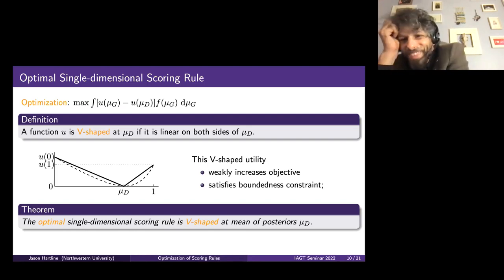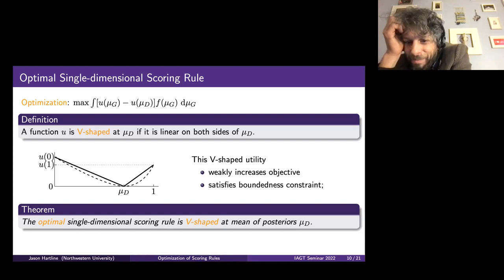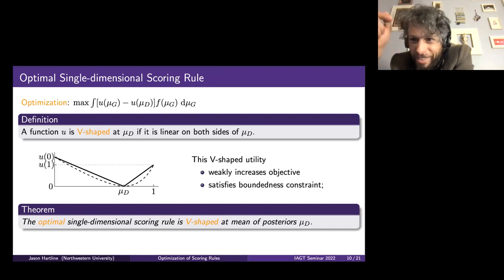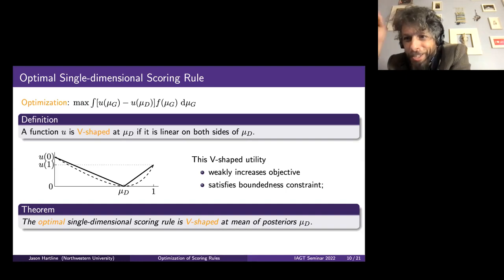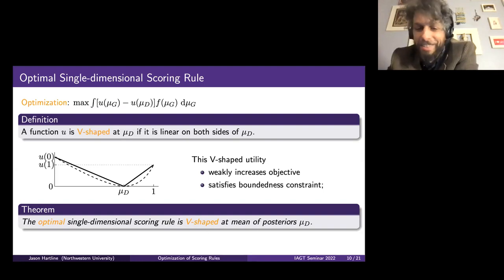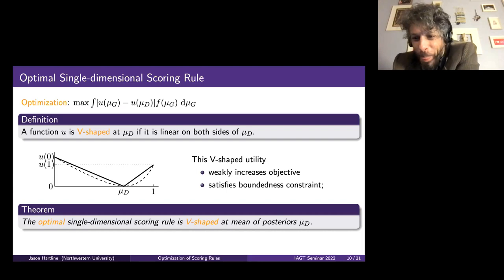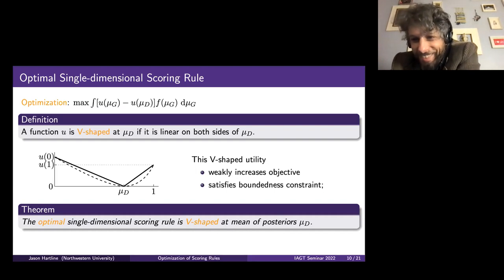Making it V-shaped not only improves the objective but also only makes the boundedness constraint weaker, because the boundedness constraint comes from the slope at the far side — and making this change makes the slopes shallower, so the constraint becomes less binding. So you get the straightforward result that the optimal single-dimensional scoring rule is V-shaped with the vertex at the prior mean. The interpretation is nice: you're just asking the agent to choose left or right — is the outcome to the left or to the right of the mean? That's the question to maximize incentive for effort.